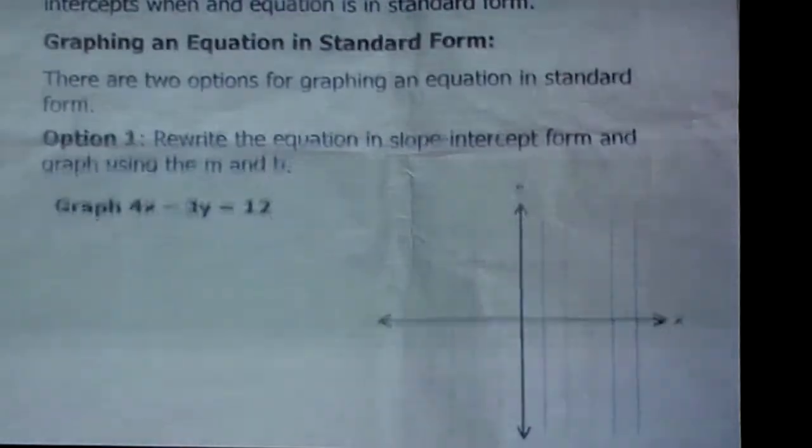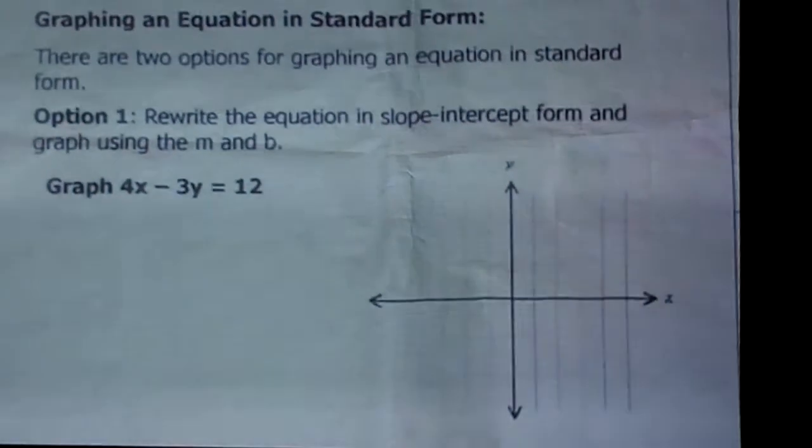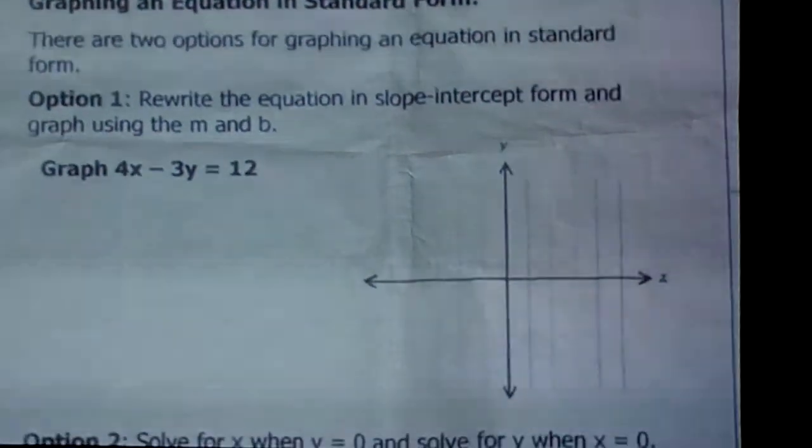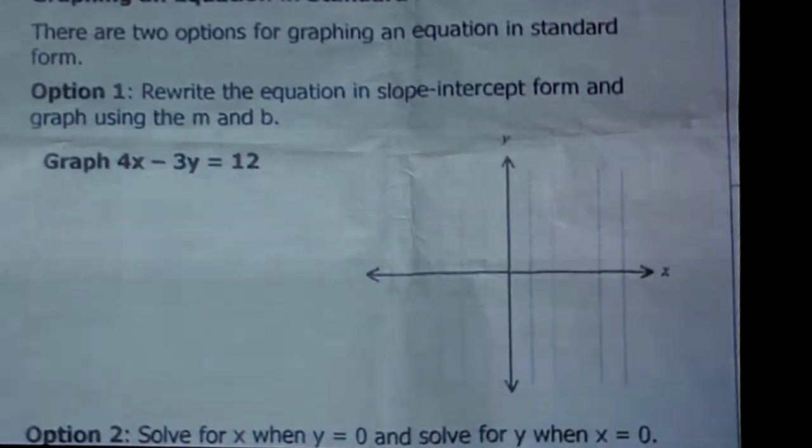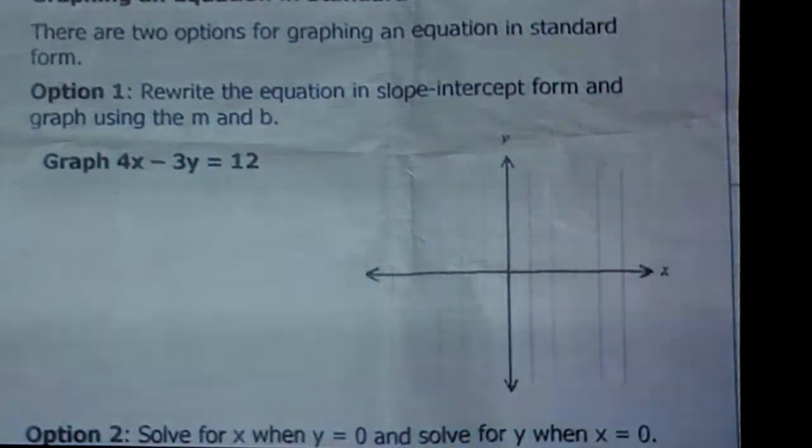So when you're trying to graph an equation that's given to you in standard form, which is basically our goal today, there's two different ways you can do it. I'm going to show you option 1 and option 2. So option 1, when you were given an equation like this before, you rewrote it. You solved for y and you identified the slope and the y intercept and graphed it. So let's do that.